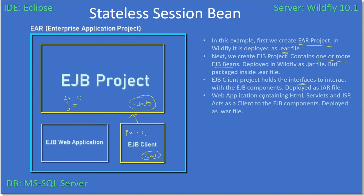Next we will create a web application that will contain the front-end user interfaces — HTML, servlets, or JSP. These components will act as a client for the EJB project. In our learning series, we will define functionality inside the EJB project, expose those functionalities through the EJB client, and the EJB web application will make use of these interfaces.